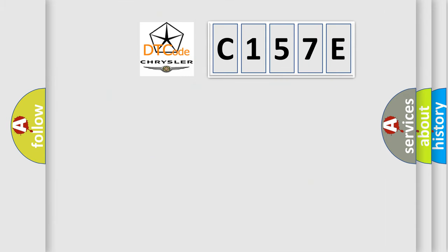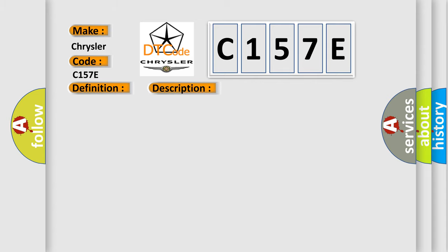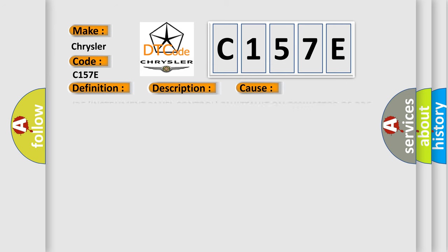So, what does the diagnostic trouble code C157E interpret specifically for Chrysler car manufacturers? The basic definition is: Restraint System Passenger Disable Indicator — General Electrical Failure. This is a short description of this DTC code: fault on the auxiliary tool circuit on dashboard center. This diagnostic error occurs most often in these cases.